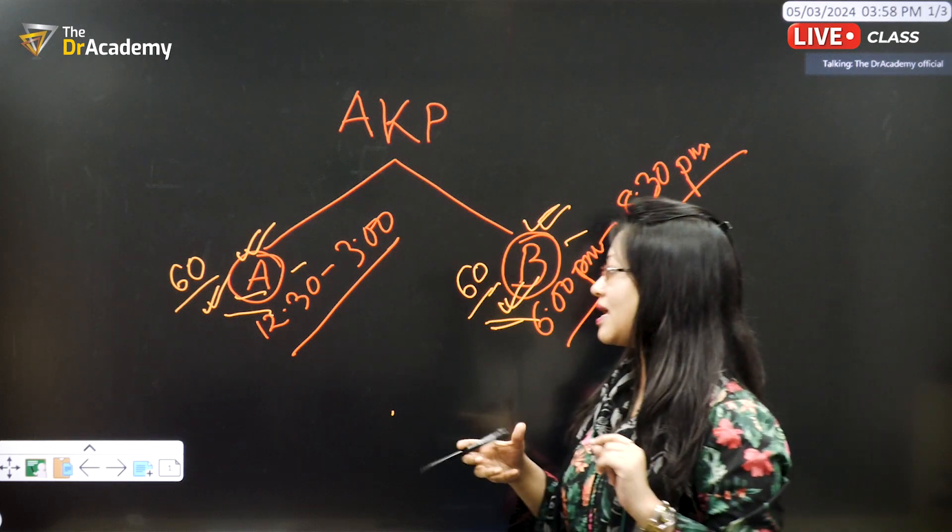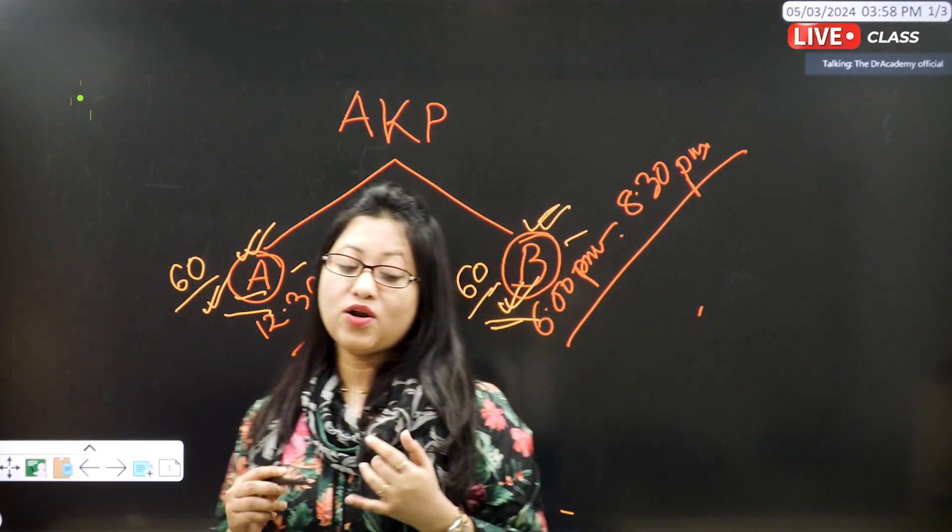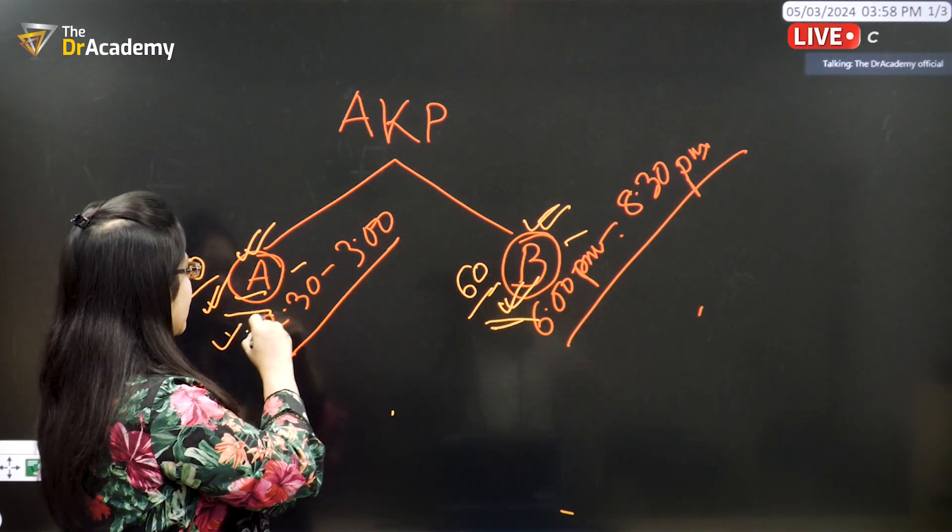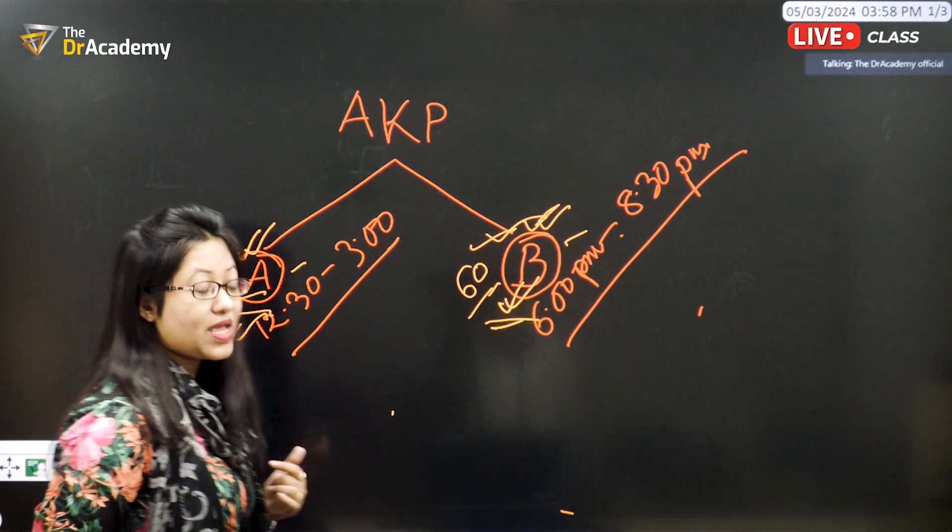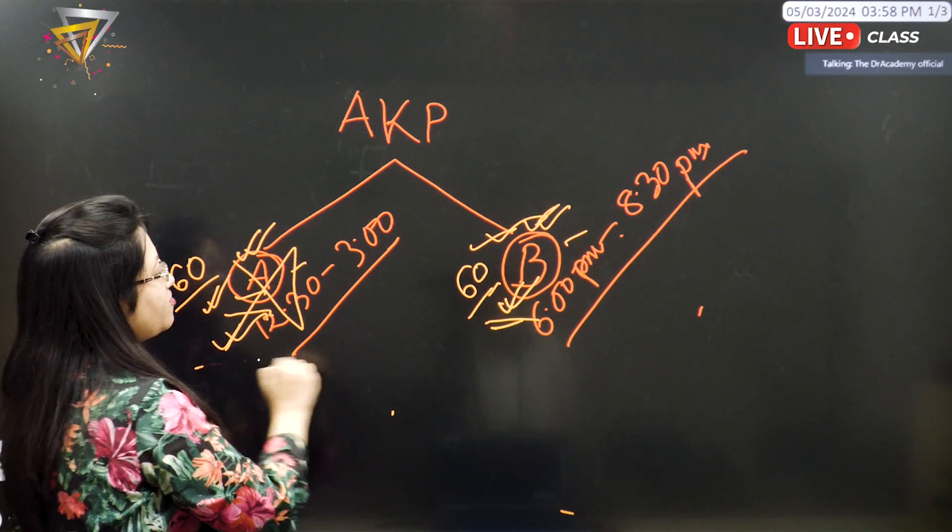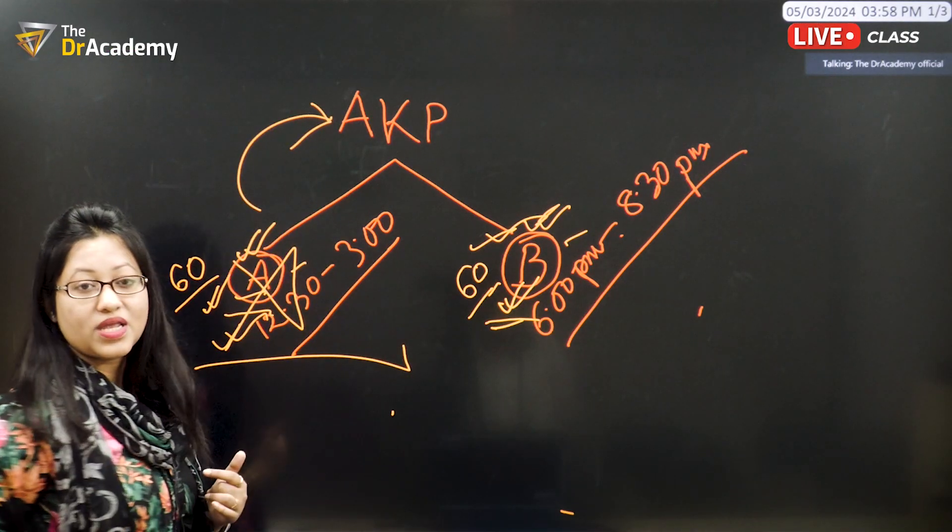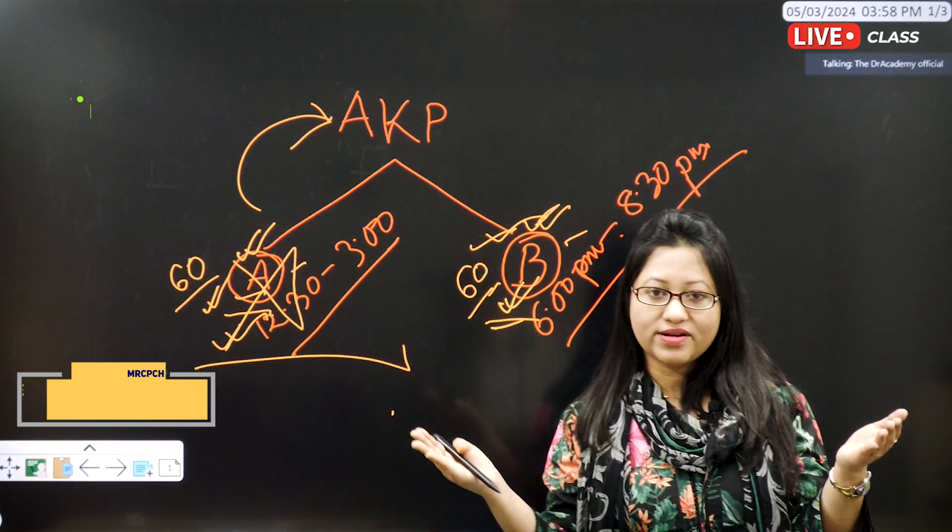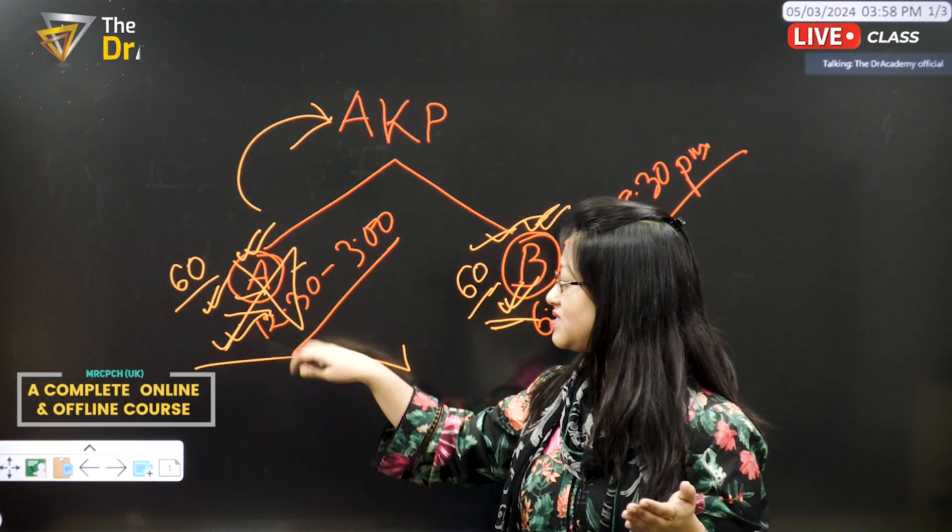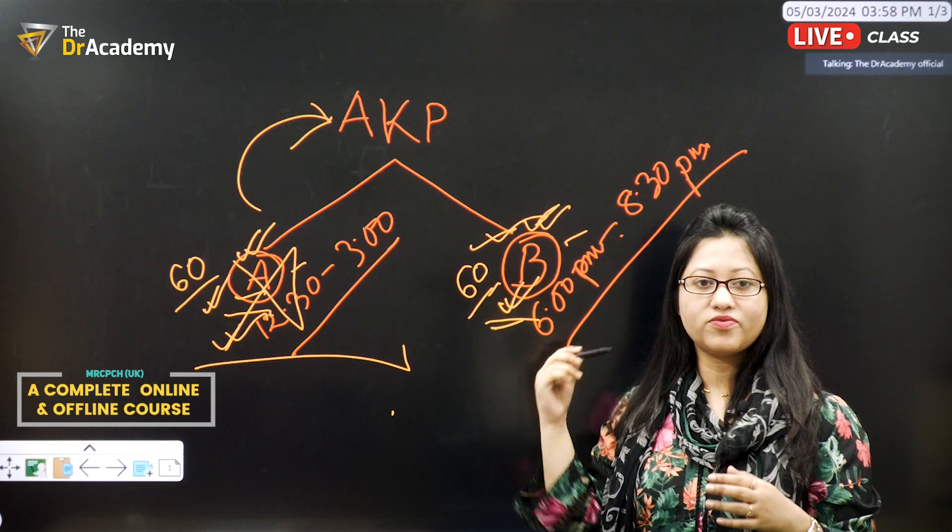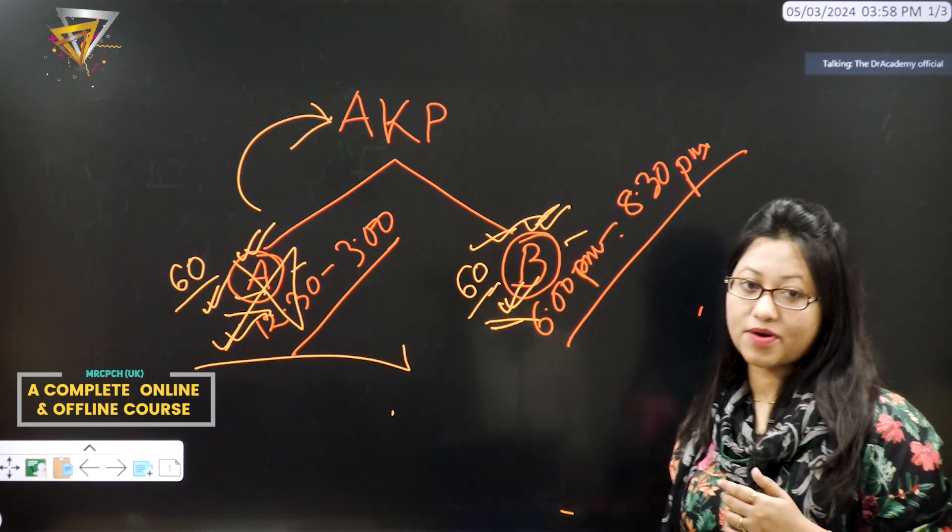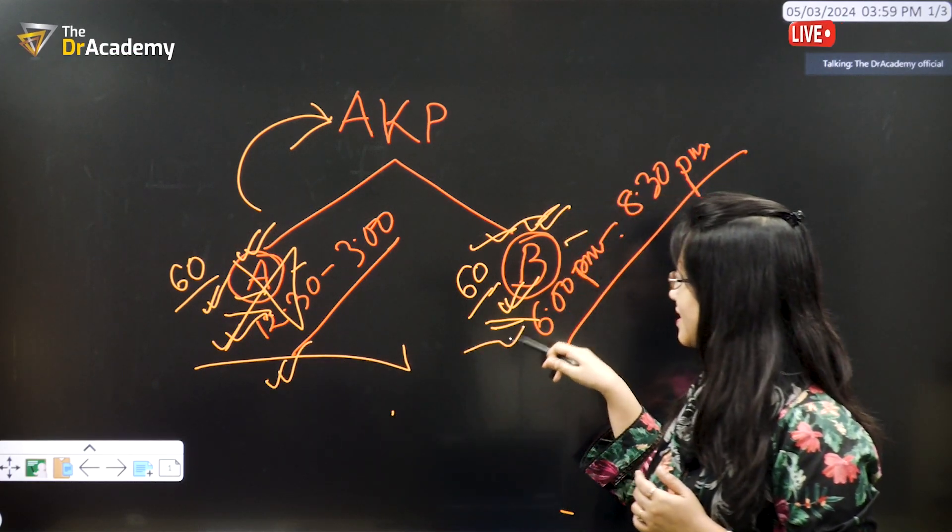First of all, this is the number one thing. Number two thing is, in order to complete this AKP, you have to pass in both the parts separately. If you fail any of the parts, you have to give this exam again. In case of Foundation of Practice and Theory and Science, the passes were separated. Like, if you passed in FOP, you passed. Later on, you will give the test exam. But in case of AKP, you have to pass both the parts separately and both the pass marks will be separate.